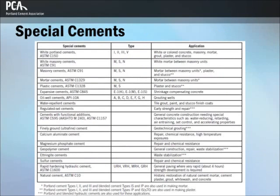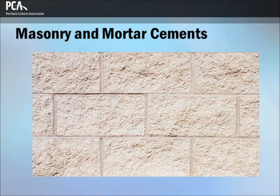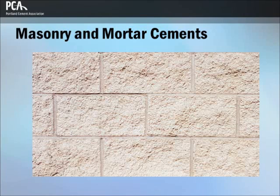Special cements are produced for particular applications. This table summarizes the various cements that will be discussed in the next set of slides. Masonry cements and mortar cements are hydraulic cements designed for use in mortar for masonry construction. Masonry cements meet the requirements of ASTM C-91 and mortar cements meet the requirements of ASTM C-1329. Both are used to make mortar according to ASTM C-270. Masonry cements are also used in Portland cement based plaster or stucco.